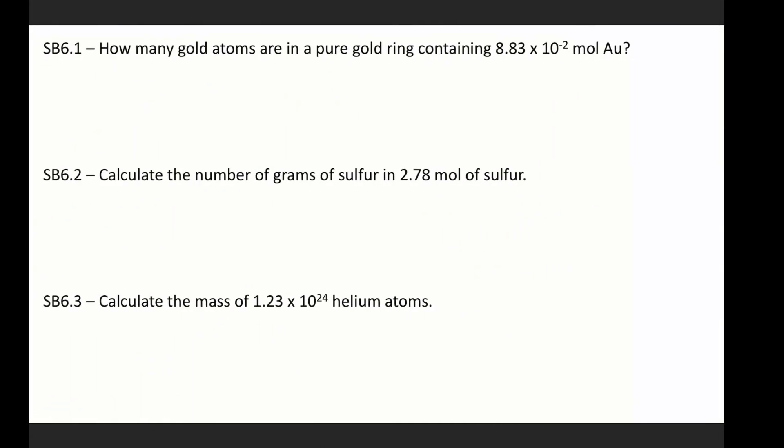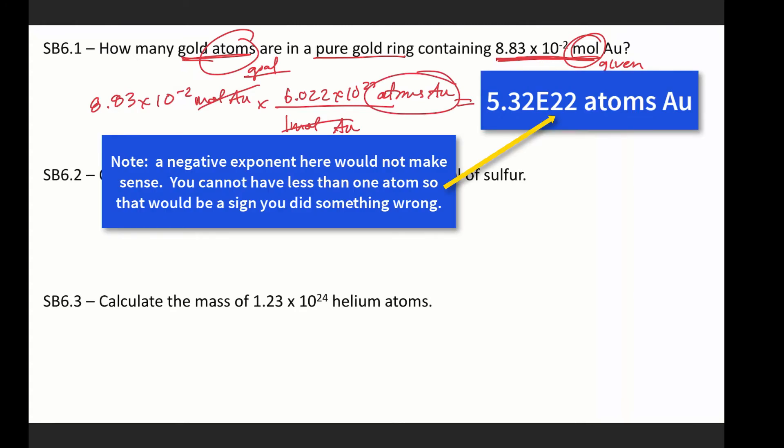So how many gold atoms are in a pure gold ring containing this many moles? So my given is moles. My goal is atoms. So I just need a relationship between moles and atoms. Oh my gosh, what is that? Ding, ding, ding, Avogadro's number. So this one is pretty simple. And so then for every one mole of AU, there are 6.022 times 10 to the 23rd atoms of AU. Moles cancel. Atoms of AU are all that's left. And then I just need to make sure I do the math correctly.